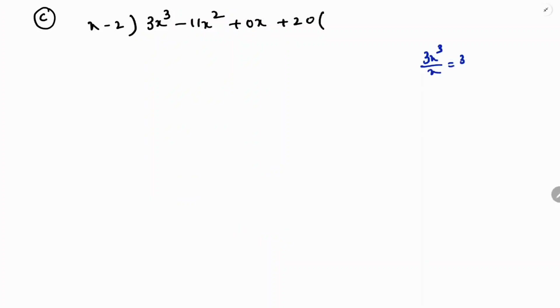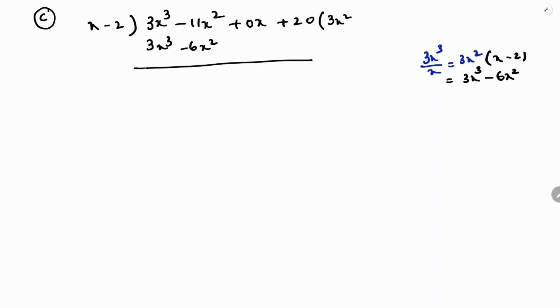Divide 3x³ by x to get 3x². Write 3x² in the quotient and multiply with x - 2: 3x² × x = 3x³, and 3x² × 2 (with minus) = -6x². So we get 3x³ - 6x². Subtract: 3x³ cancels, and -11x² + 6x² = -5x². Bring down 0x and +20 to get -5x² + 0x + 20.